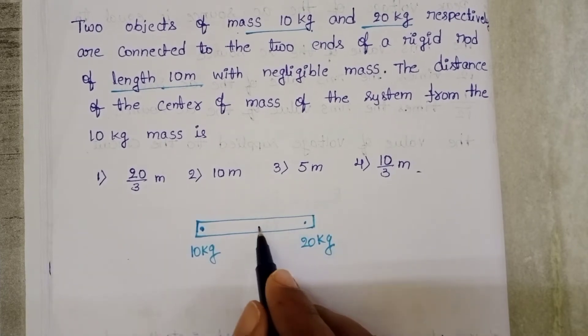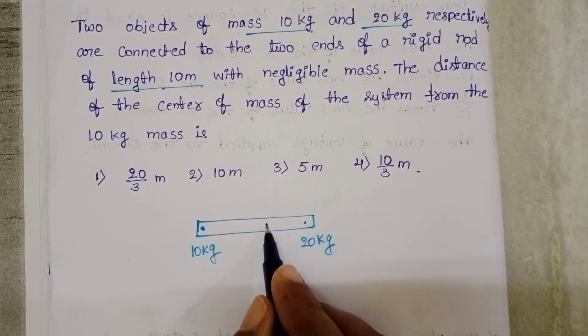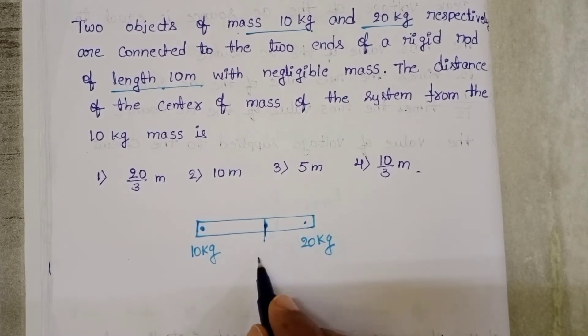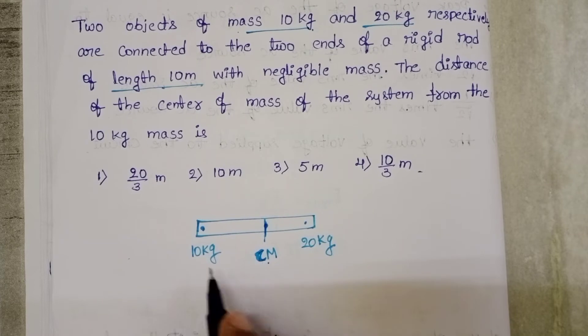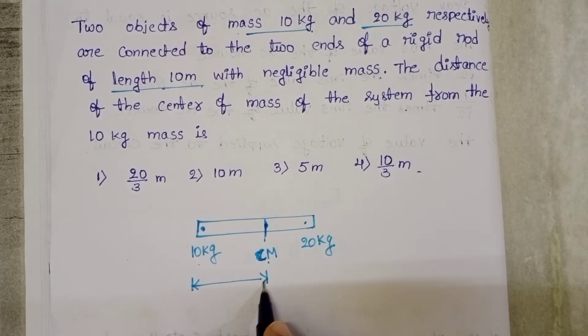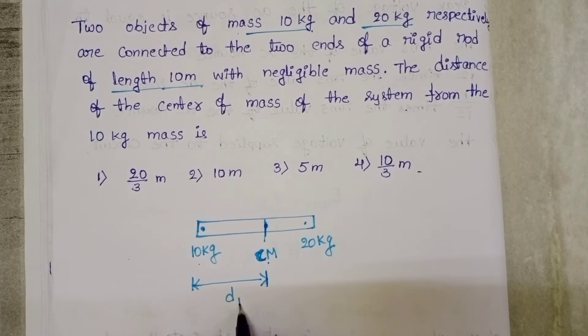The center of mass is located in between these two points. This is the position of the center of mass. We have to find out the distance of the center of mass from the lighter object. Let this distance be d1.